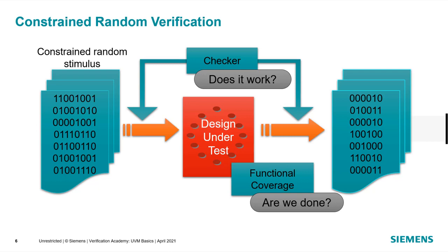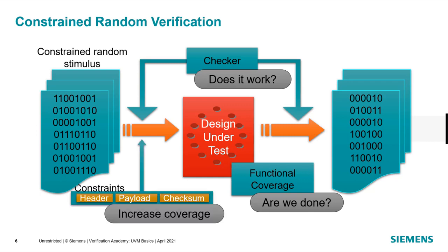The two big questions are: does it work and are we done? UVM allows you to build an environment that takes advantage of constrained random to uncover things you hadn't necessarily predicted, and to answer both questions. Once we understand what our coverage is, we can modify our constraints to increase coverage. For example, with packets having headers, payloads, and checksums, we might start with small payloads, then once we've reached coverage on those, modify constraints to use larger payloads and expand the range of header values to target more aspects defined in our verification plan.